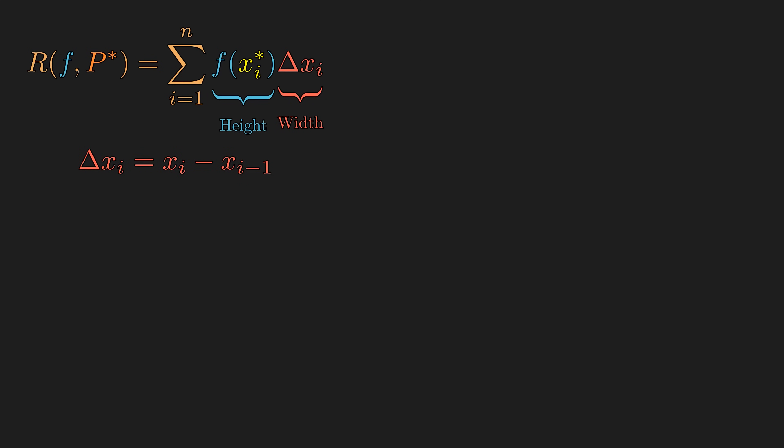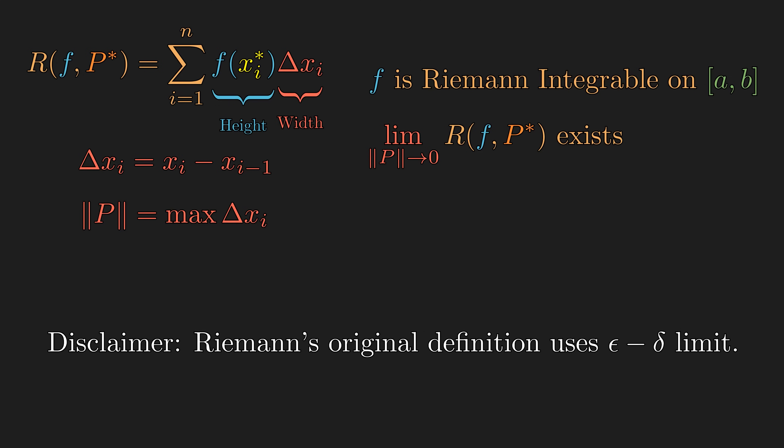Now that we have the Riemann sum, we are ready to define the formal definition of Riemann integrability as Riemann originally defined. We can first define the norm of a partition, which is simply the length of the biggest subinterval. Then, we say a function is Riemann integrable on the interval a to b if the limit of the Riemann sum approaches a particular value whenever the norm, or the biggest subinterval, approaches zero. We call that limit the Riemann integral of f from a to b.